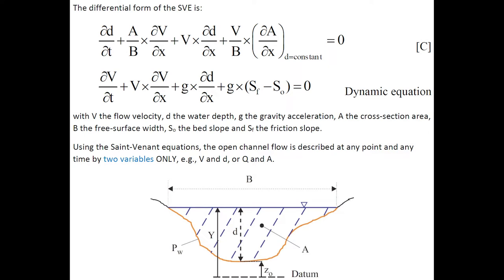The differential form of the Saint-Venant equation is shown here, in which A is a cross-sectional area and B is the free surface width, both measured perpendicular to the flow direction onto the streamlines. Using the Saint-Venant equations, the open channel flow is described at any point and any time by two variables only.